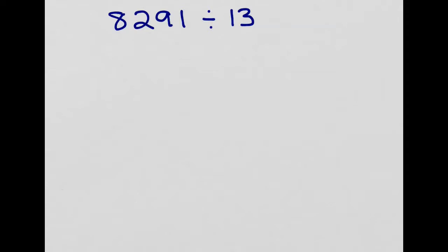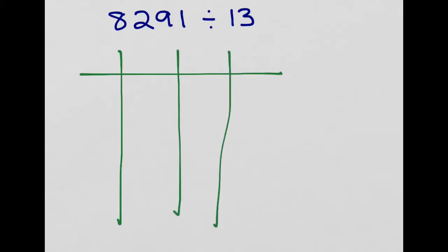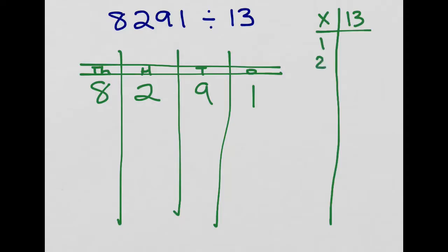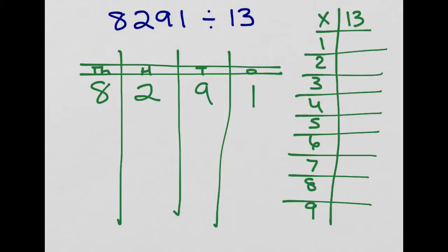But what if I have a bigger divisor? Take a look at this problem — I have a dividend like I'm used to, but my divisor is larger, a two-digit divisor. Sometimes that can feel stressful and make you think the rules are different, but they're not. We can use the exact same strategy. I'm going to start by building a place value chart and put my dividend, 8,291, on it just like I always have. Then I'll set up my table of multiples for my divisor, which is 13. Most kids don't have their 13s memorized, which means we really have to get into skip counting.